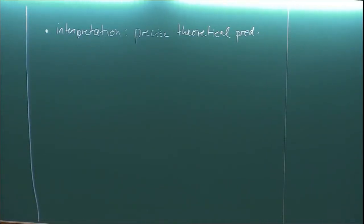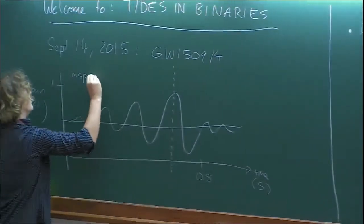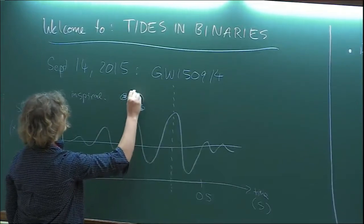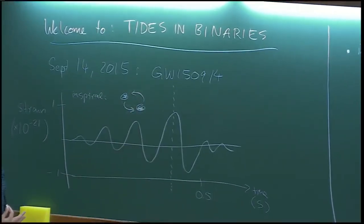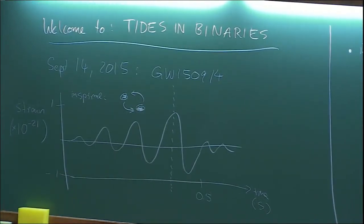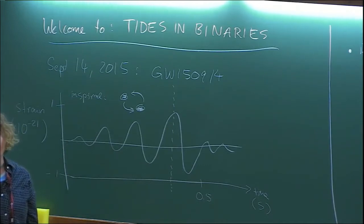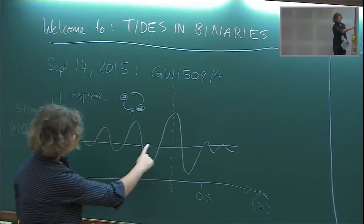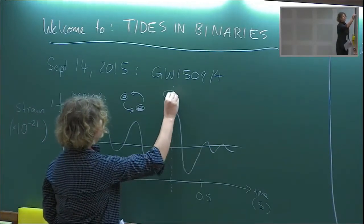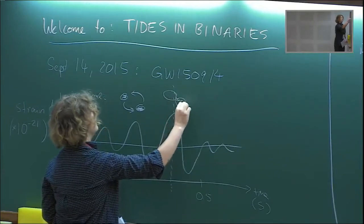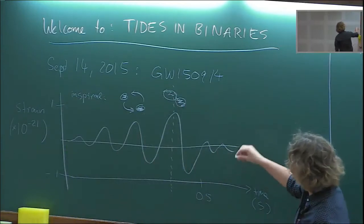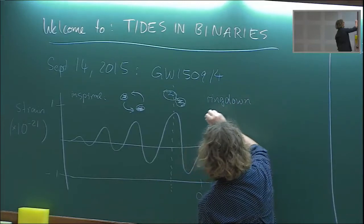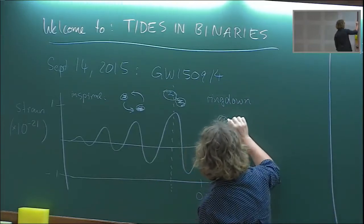The first part is the inspiral, where two objects were orbiting each other — about 29 and 36 solar masses — orbiting at more than 75 orbits per second before merging. These objects had about a 90 kilometer radius, so it's really remarkable: massive objects orbiting at these high velocities. This is what generated the signal. Then came the merger, where the two objects collided and formed a common object.